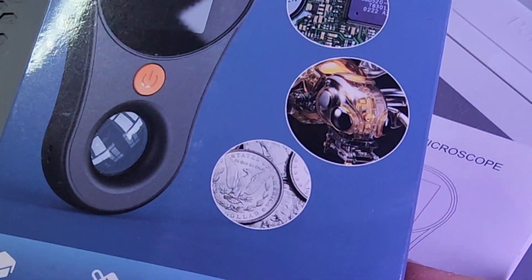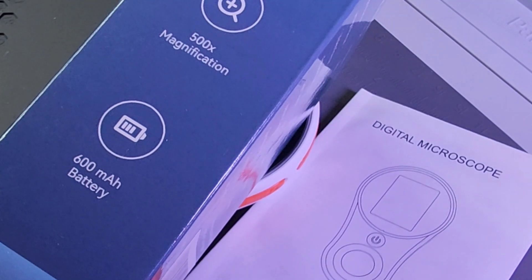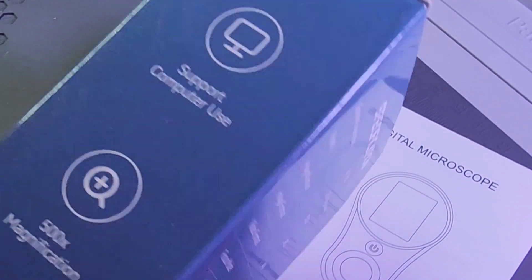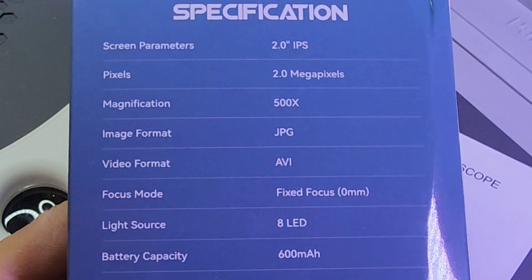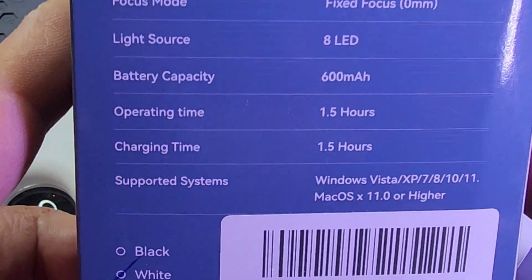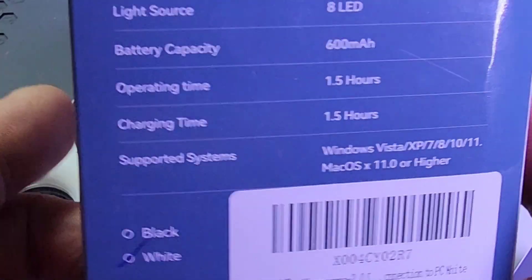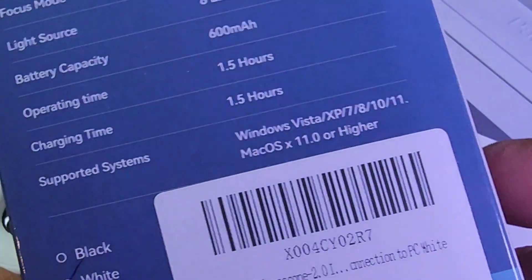And it comes in white or black. I got the white one. 500 times magnification, 600 milliamp hour battery. 2-inch IPS screen, 2 megapixels, light sources, 8 LEDs, and they are powerful.